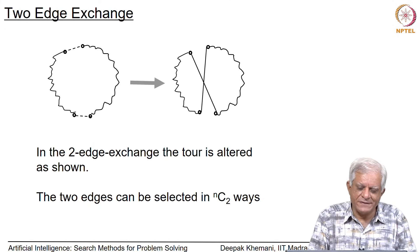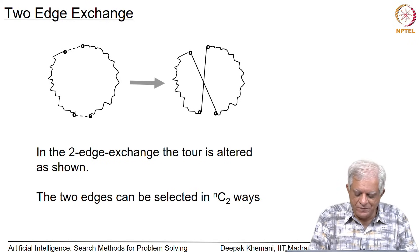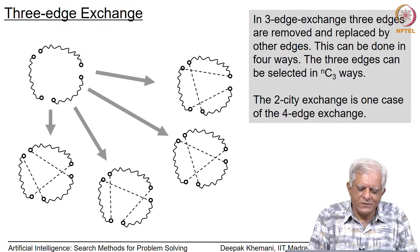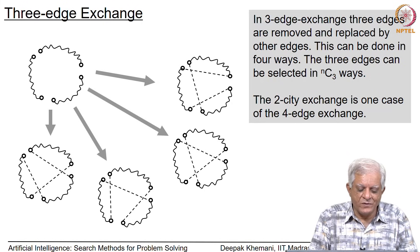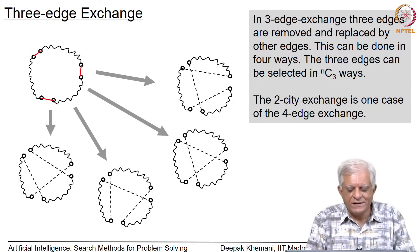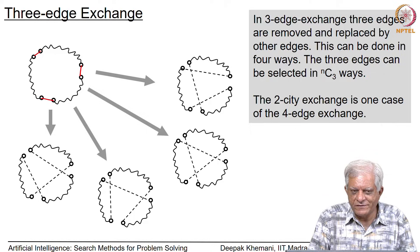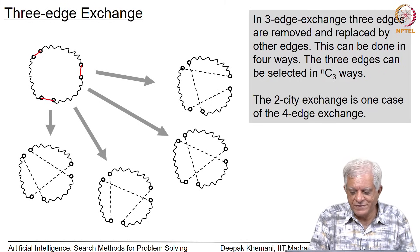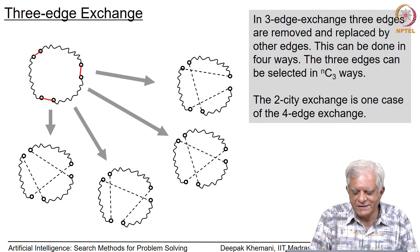Another possibility is three-edge exchange, where you remove three edges — drawn in red here. If you remove these three edges, you can fill them back in four different ways. You can remove three edges in n choose 3 ways, which gives a much denser neighborhood function.